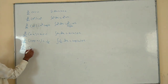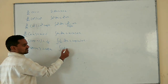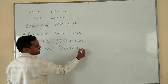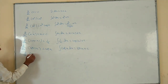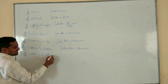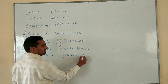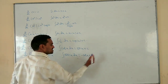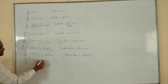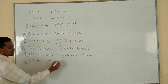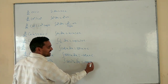Differentiation of sine x is cos x. Integration of cos x dx equal to sin x plus c. dy/dx of cos x is equal to minus sin x. Integration of sin x dx equal to minus cos x plus c. dy/dx of tan x: differentiation of tan x is secant square x. Integration of secant square x dx is tan x plus c.